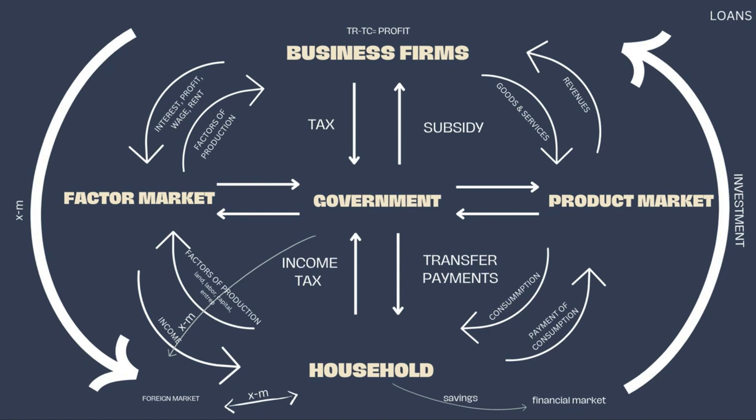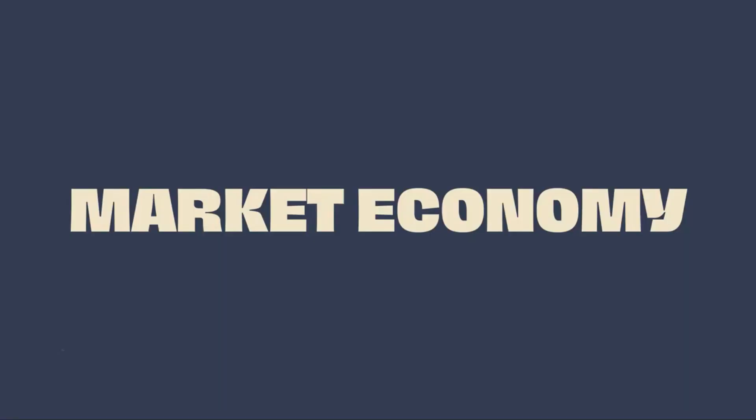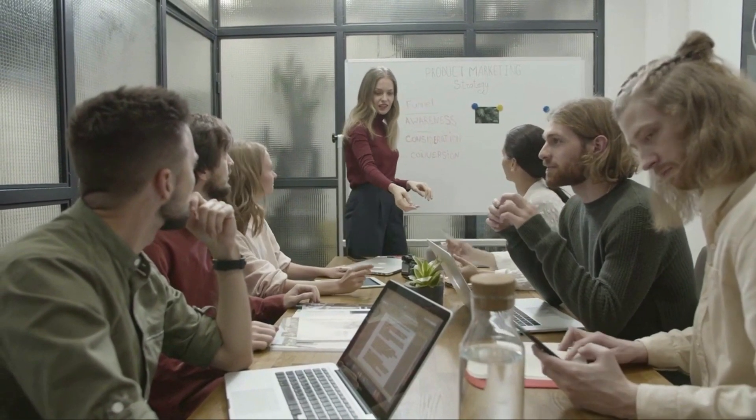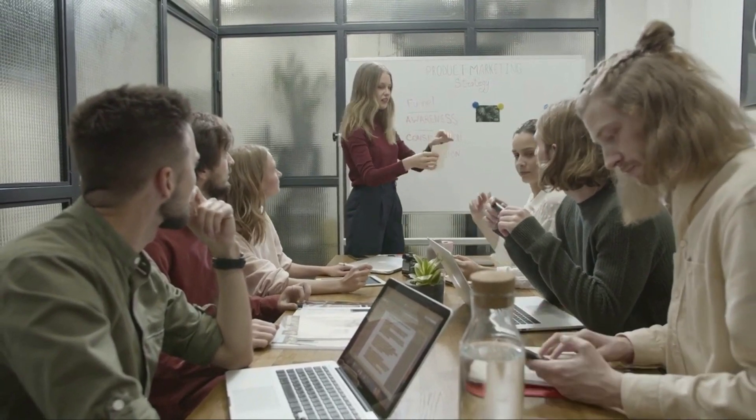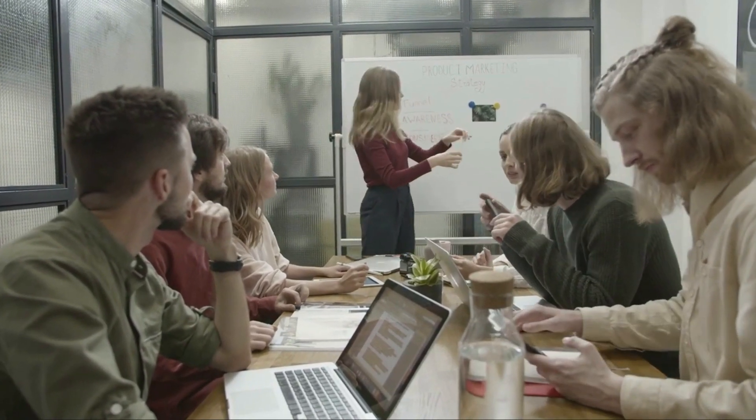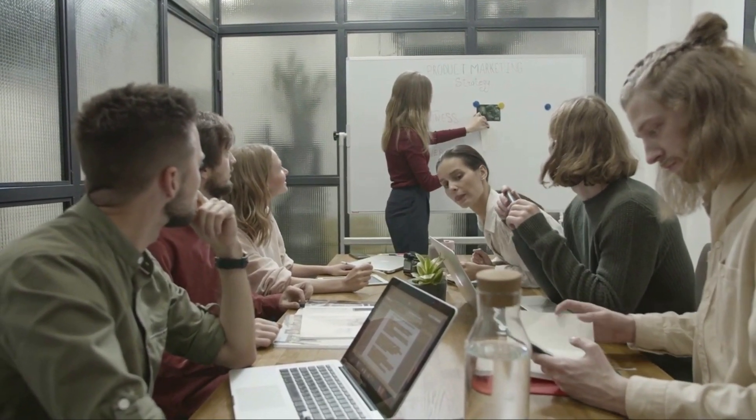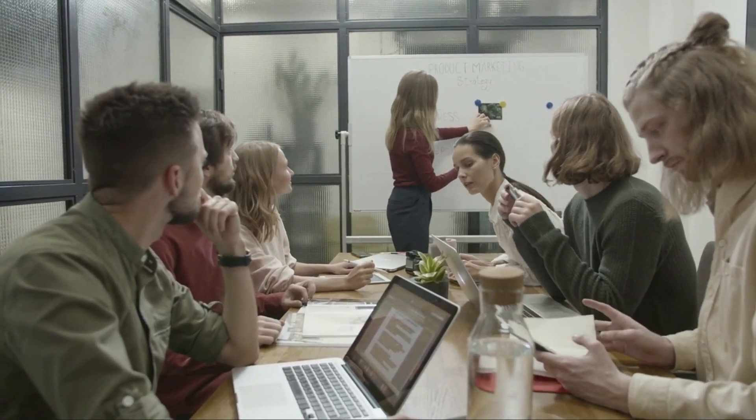And that is how the economic circular flow works in a market economy. Now, what is a market economy? The market economy is a system where the production of goods and services is based on the law of supply and demand. The business would decide on what to produce, how many to produce, and how much the product would be sold at, depending on the factors affecting supply and the demand of consumers.